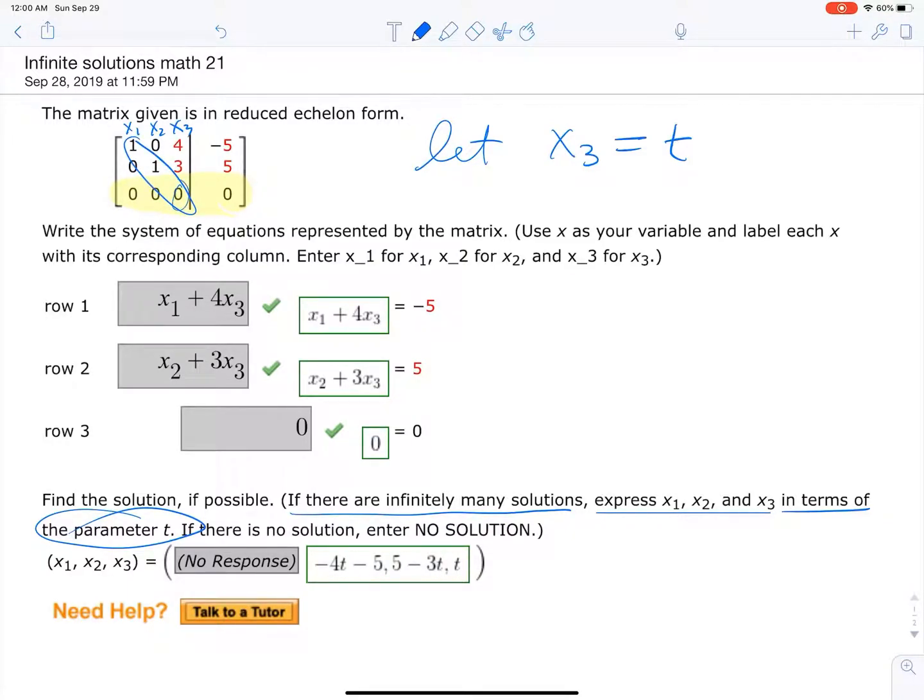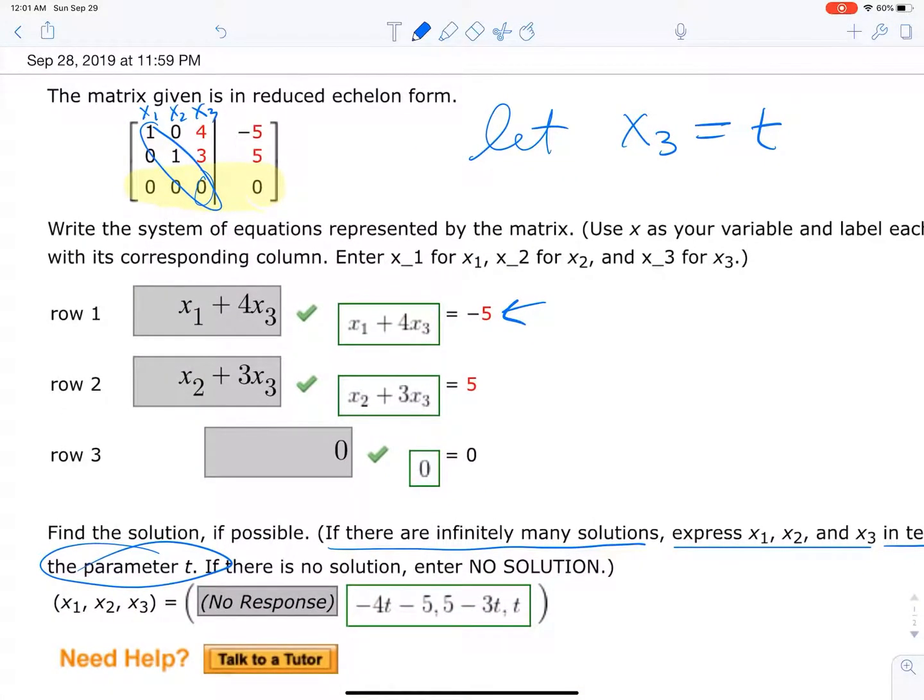So we say let x3 equal t. This is like x1, x2, x3 column along these diagonals. So this 0 here would be in the x3 location. That's what we got to do.